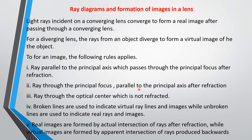A ray passing through the optical center is not refracted. We will see all these rules as we look at the ray diagrams forming images at different object positions. Broken lines are used to indicate virtual rays and virtual images, while unbroken lines indicate real rays and real images. Real images are formed by actual intersection of rays after refraction, while virtual images are formed by apparent intersection of rays produced backwards — as we discussed when we treated curved mirrors.